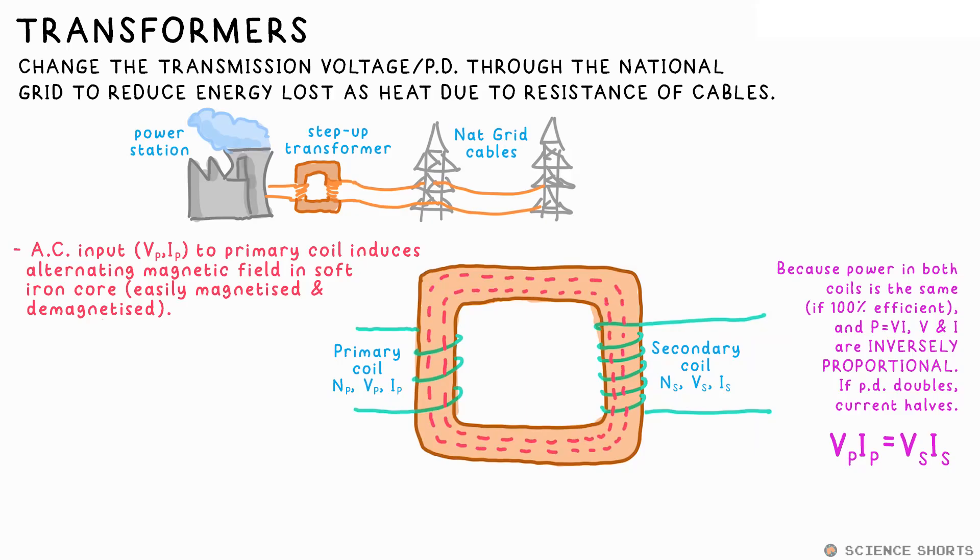We use iron for the core, by the way, as it's easily magnetized and demagnetized. In other words, it's a good guide for the magnetic field. This magnetic field then induces a voltage and current in the secondary coil.